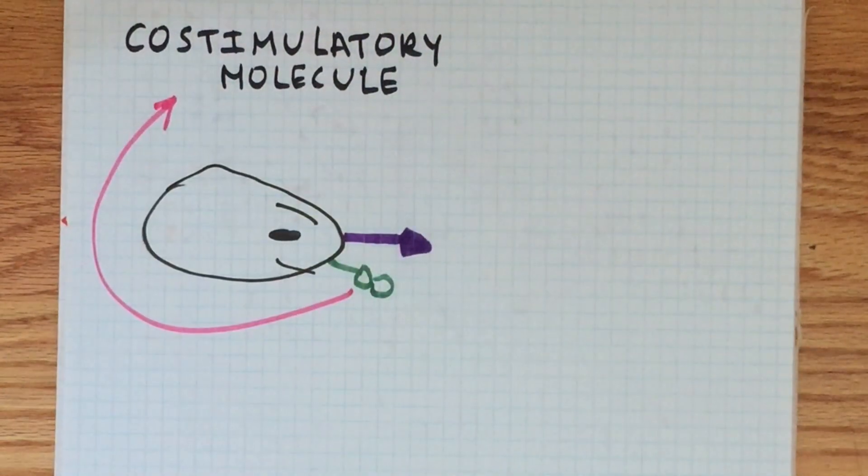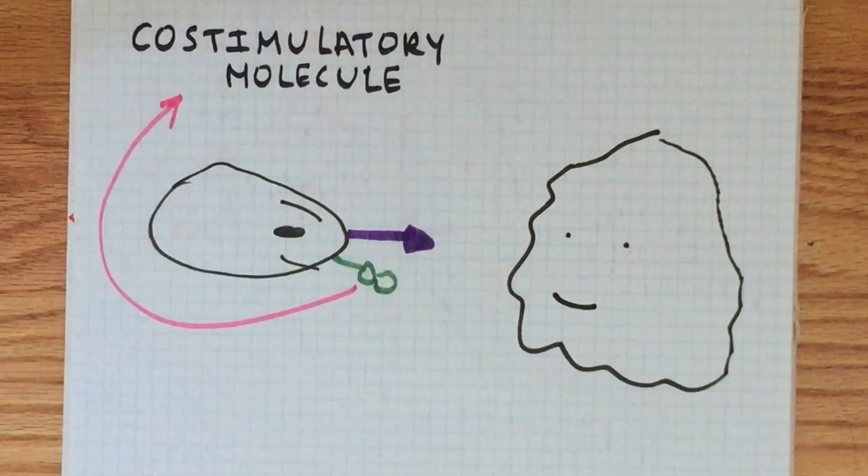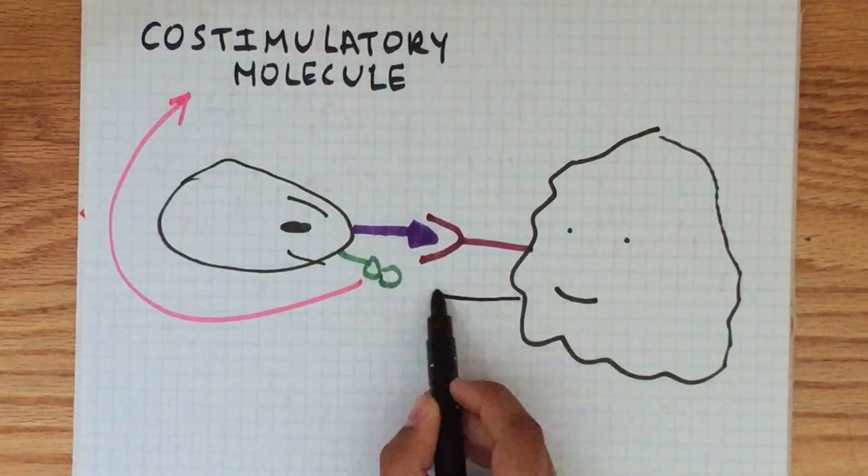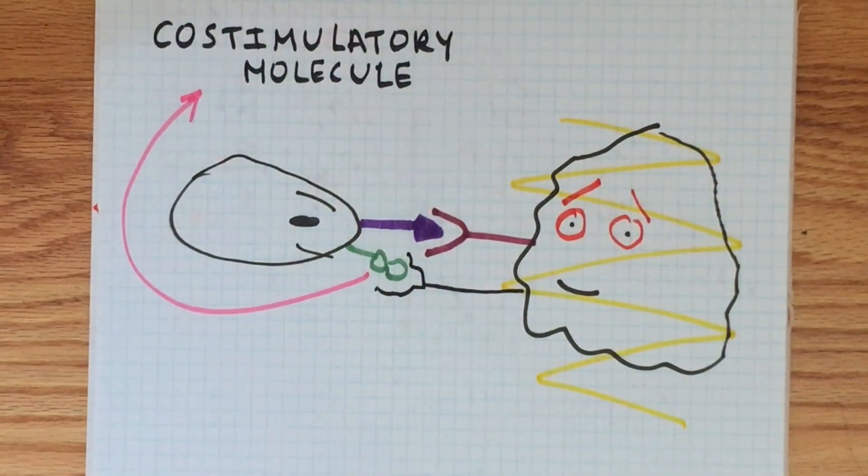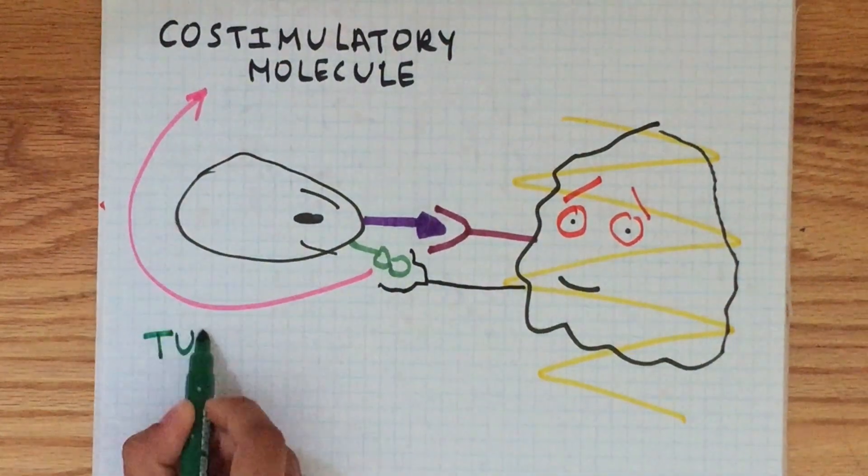Cancer cells, however, can begin to develop strategies in which they produce molecules which allow them to escape T-cells. These molecules attach to receptors on the T-cell, which triggers T-cell apoptosis, or death, before the T-cell can kill the tumor.